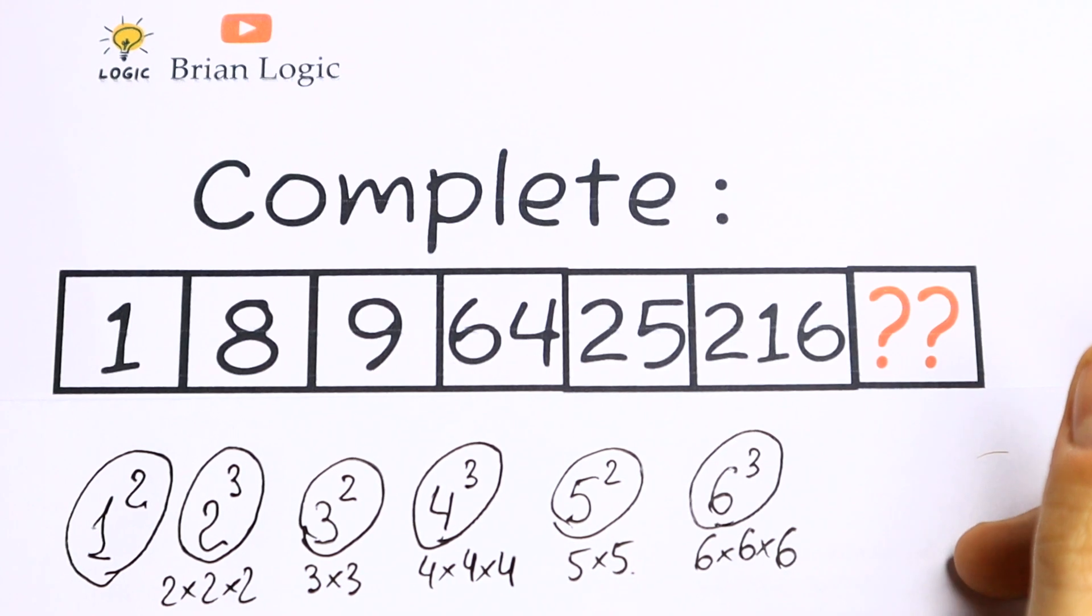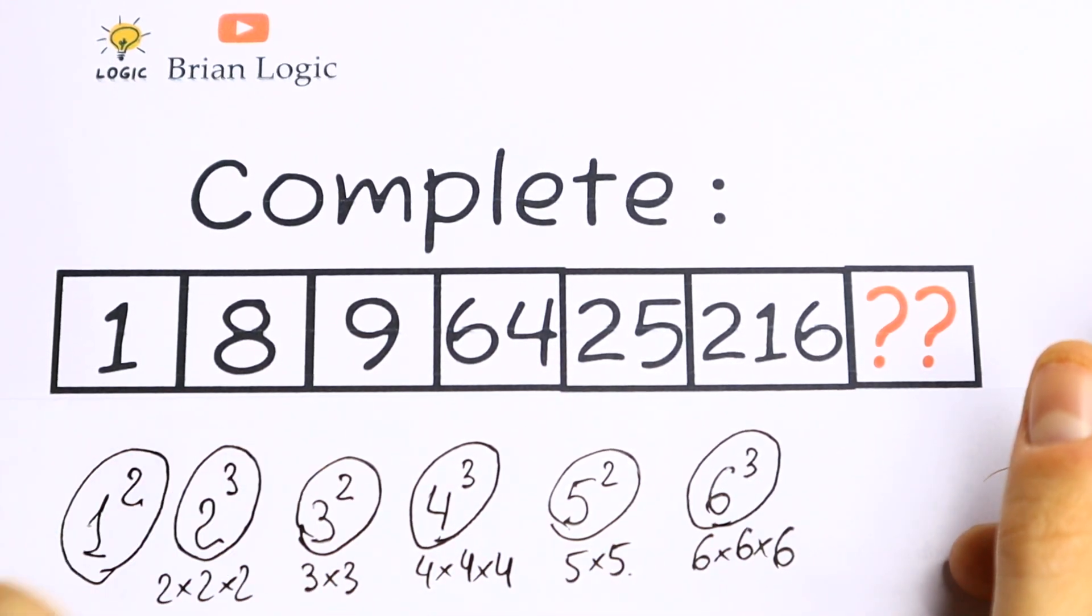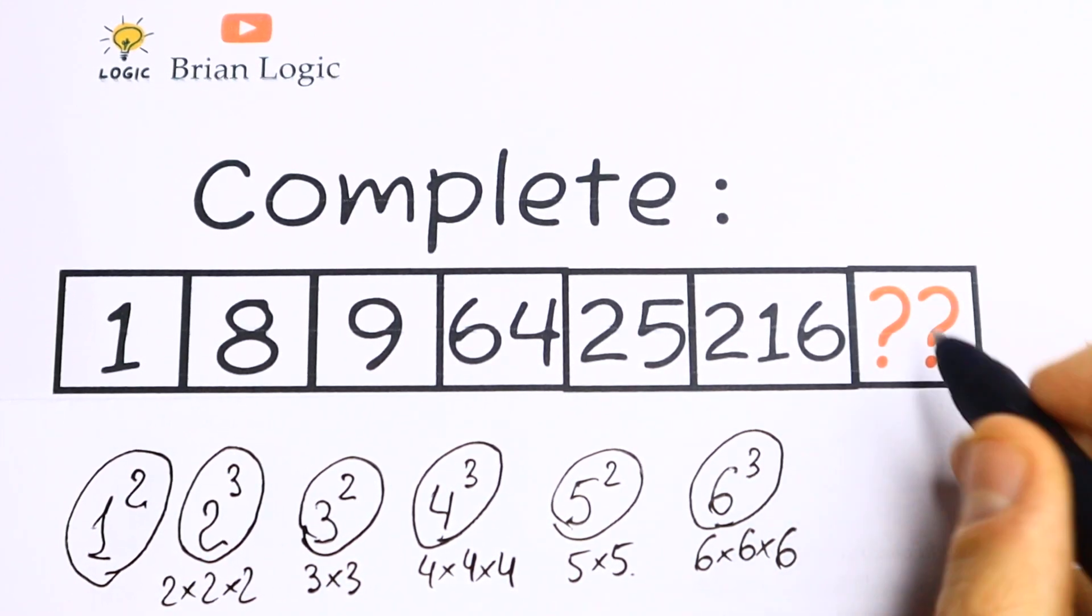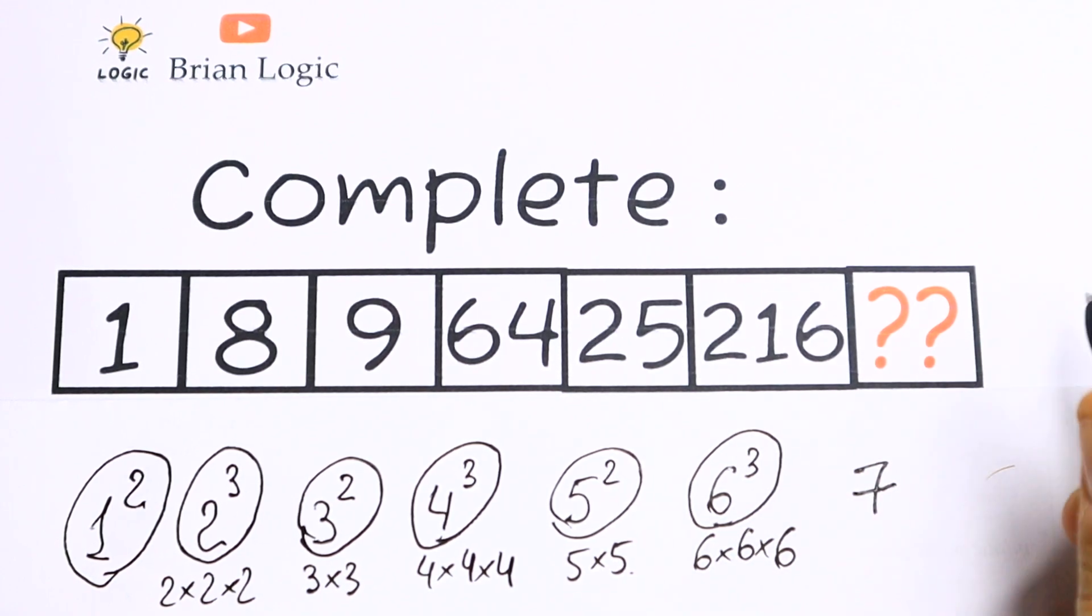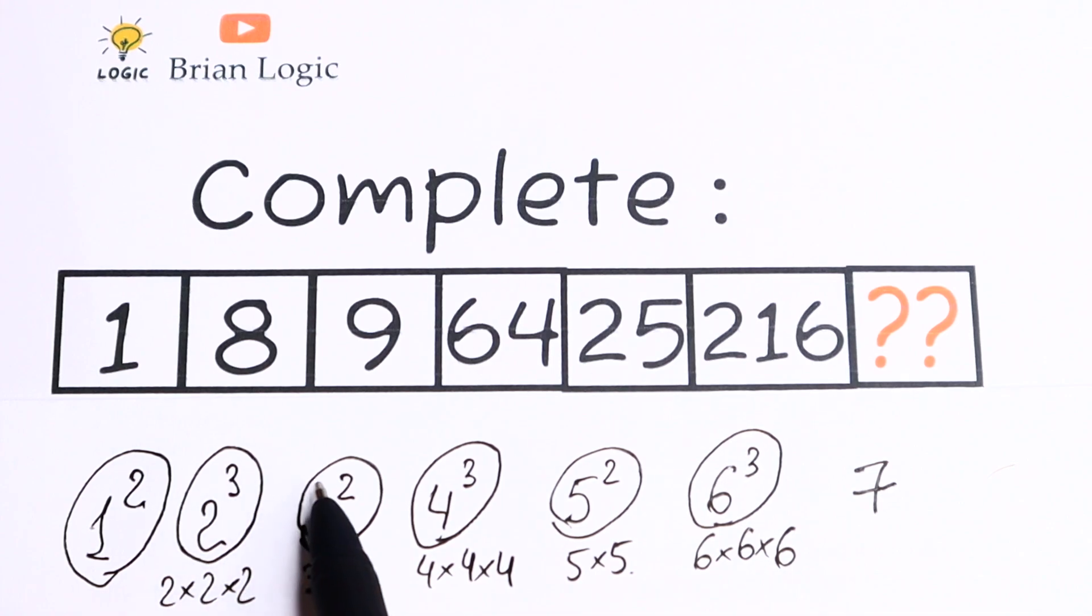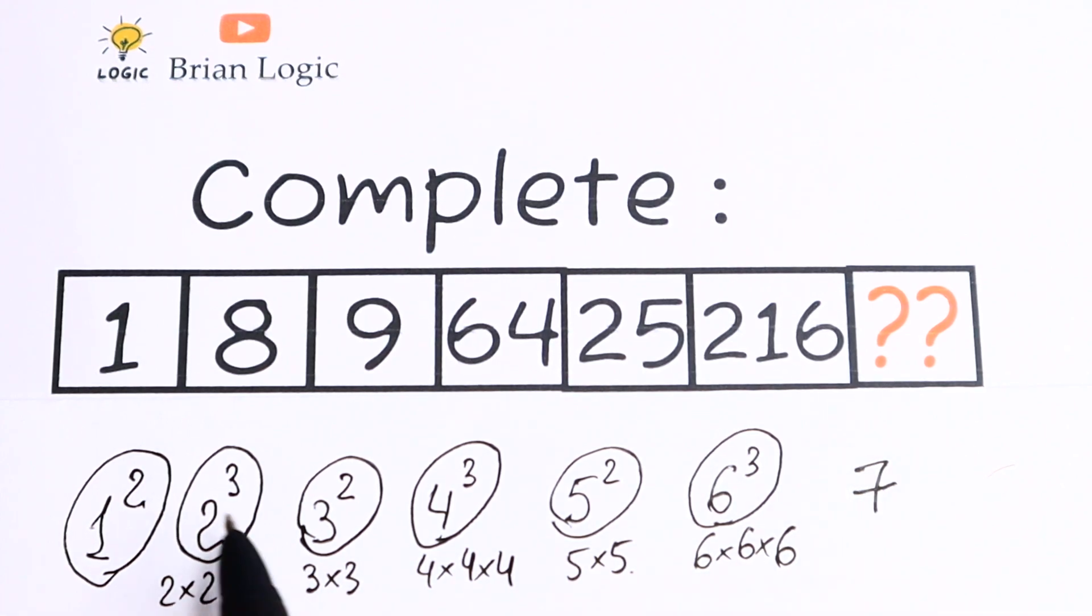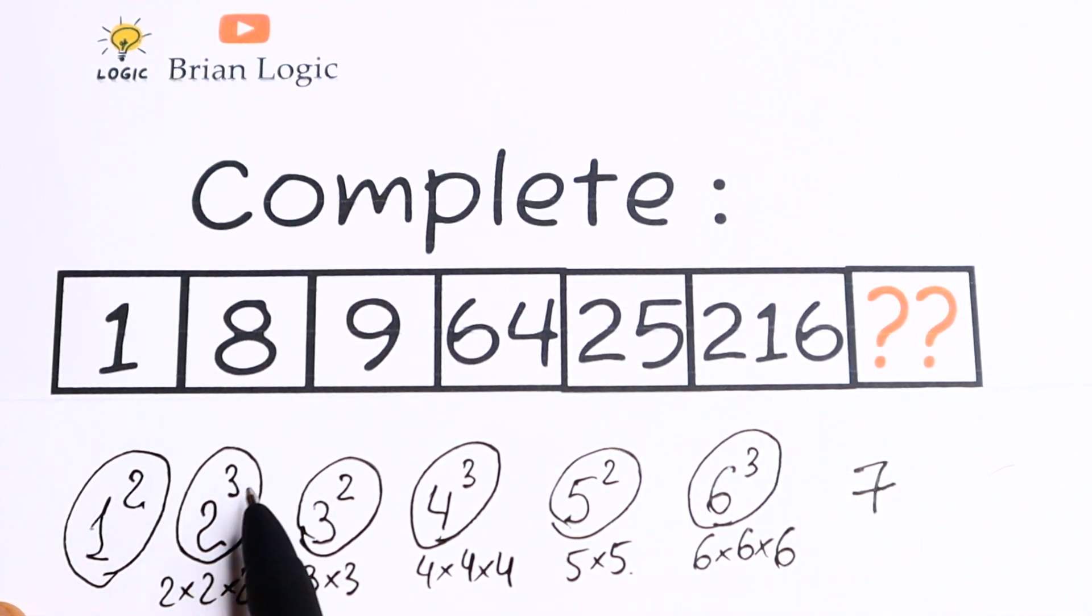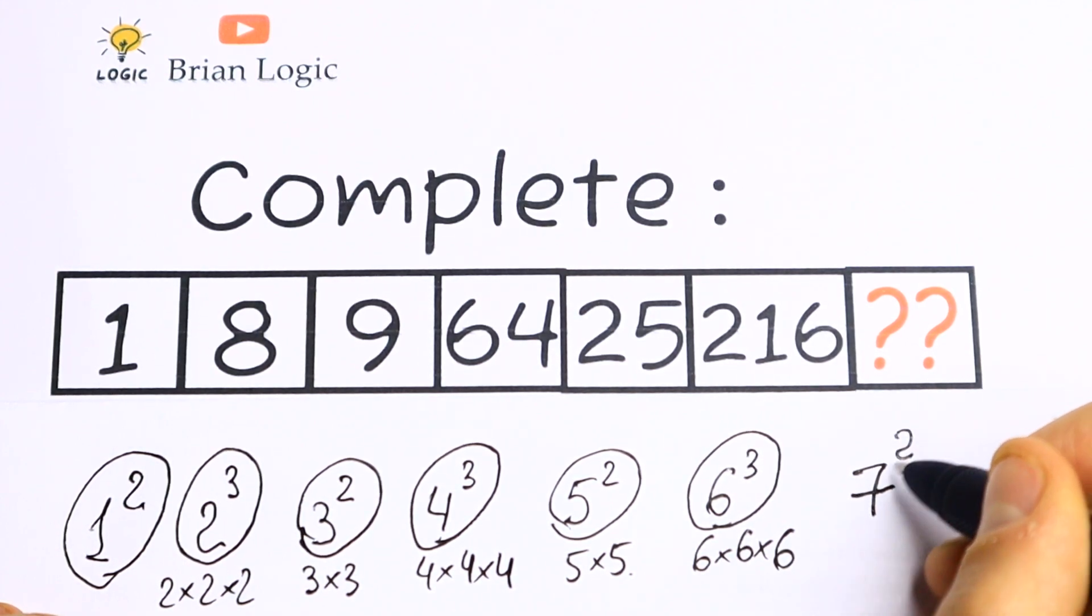As you can see, we created an order: 1, 2, 3, 4, 5, 6. So it's not hard to see that the last number starts with 7. But what about the power? Take a look. The powers: we have 2, 3, 2, 3, 2, 3. It's not hard to see that the last power will be 2, because we have 2, 3, 2, 3, 2, 3. We need to write of course 2 right here.